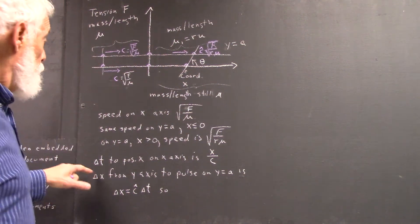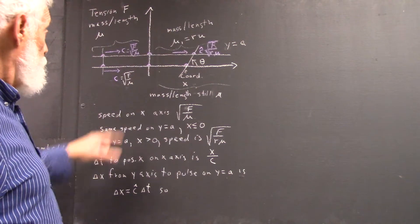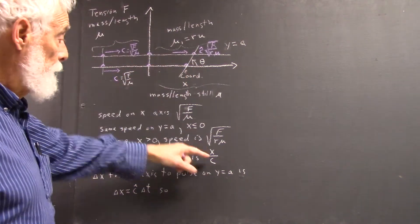Okay, well, the time to get from here to here is just this distance divided by the speed, that's x over c.